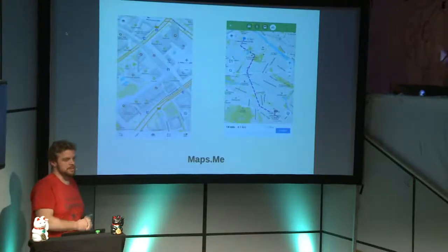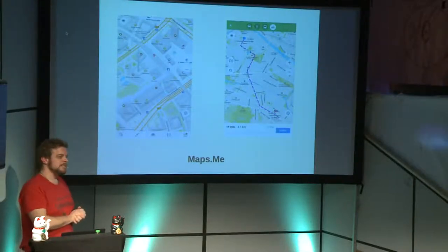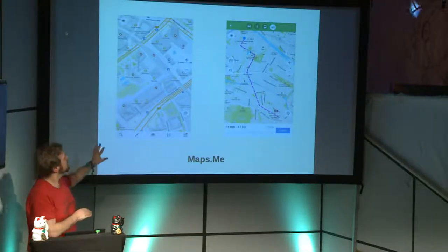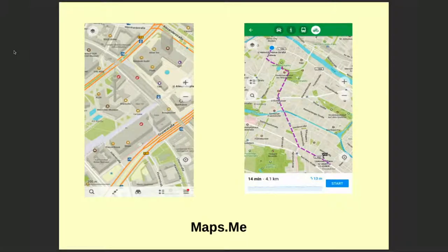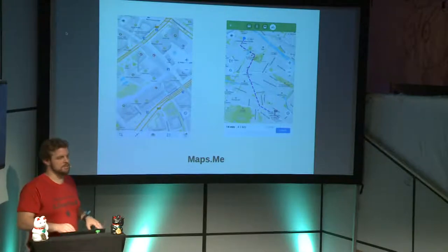OsmAnd is the best app for navigation, but some people prefer a nicer visual interface. That's where Maps.me comes in. Both apps are available elsewhere too, sometimes for money — but in F-Droid they're always free and you need no account. Maps.me has a beautiful visualization of buildings, is much simpler than OsmAnd, and also has navigation available.